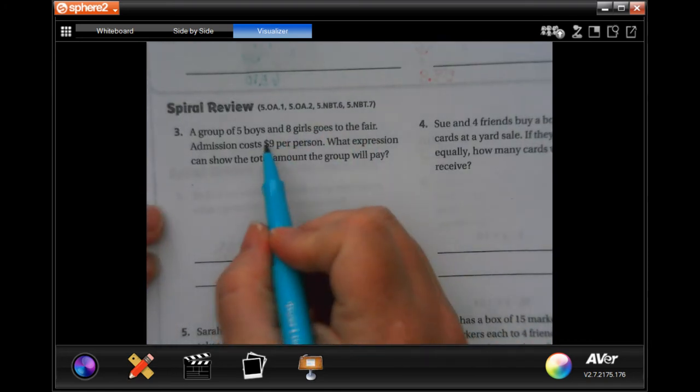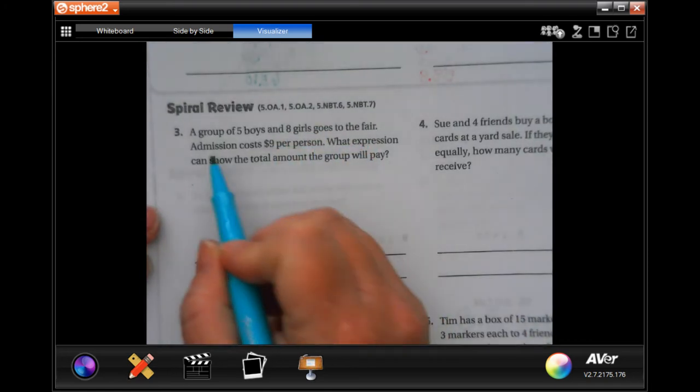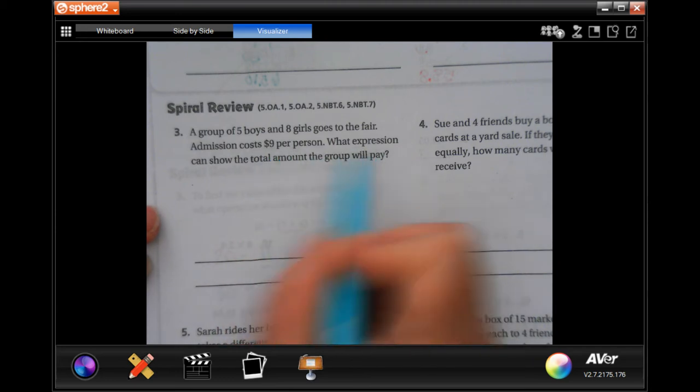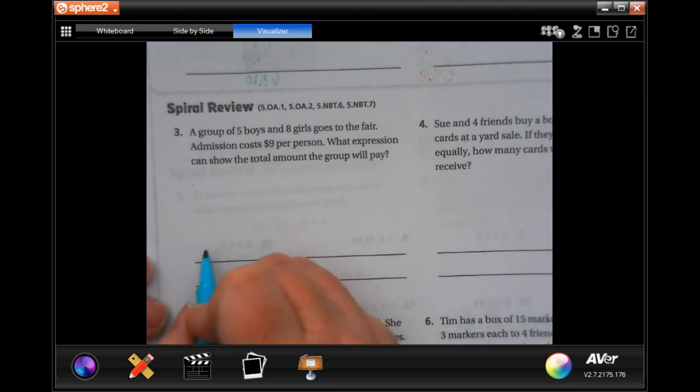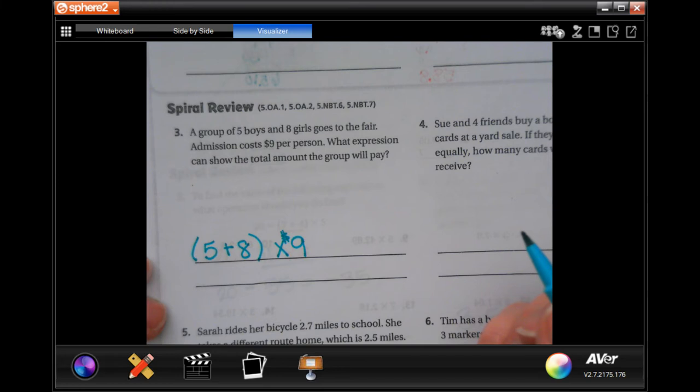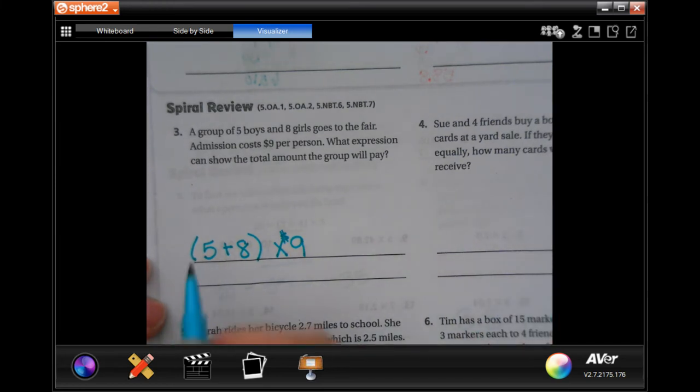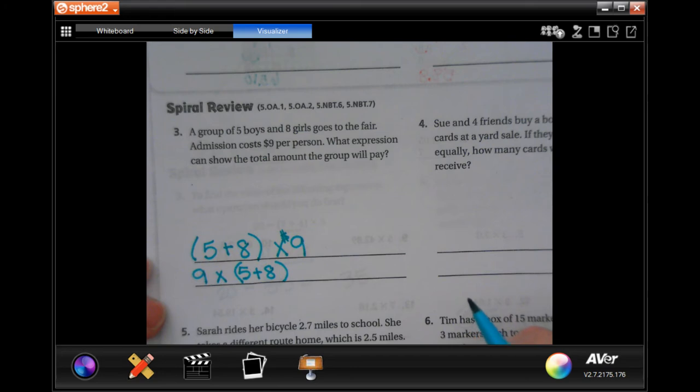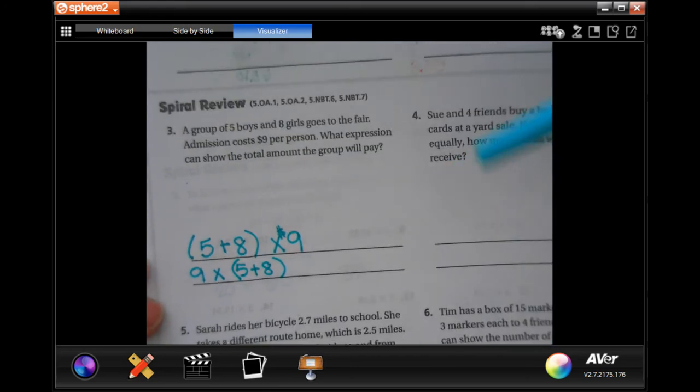Number three says a group of five boys and eight girls goes to the fair. The admission cost is $9 per person. What expression can show the total amount the group will pay? Well, we know there are five boys and eight girls, and that it's $9 per person. That's your expression. You could also write nine times five plus eight. Commutative property. Doesn't matter where it goes. As long as you have the same sign.